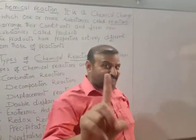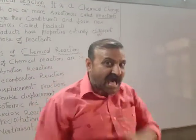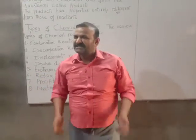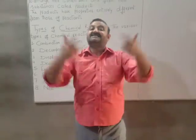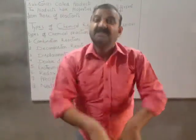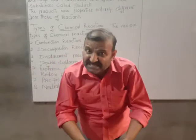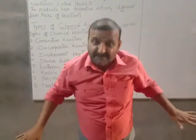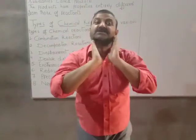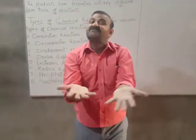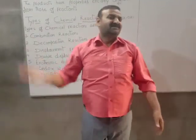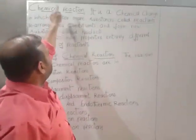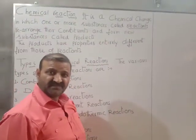So to recapitulate within a minute: a chemical reaction is a chemical change in which the reactants' constituents rearrange themselves, they lose their original properties, they form new substances, and the new substances formed are called products. Such reactions are called chemical reactions.